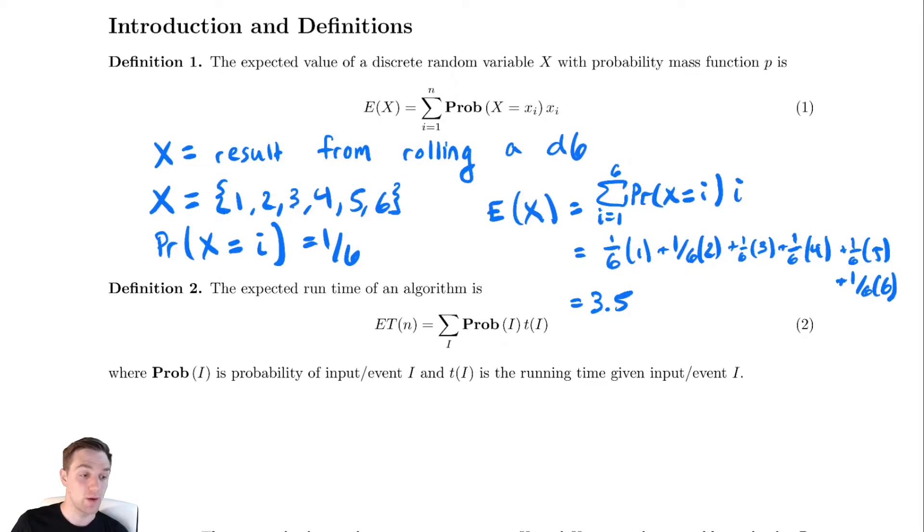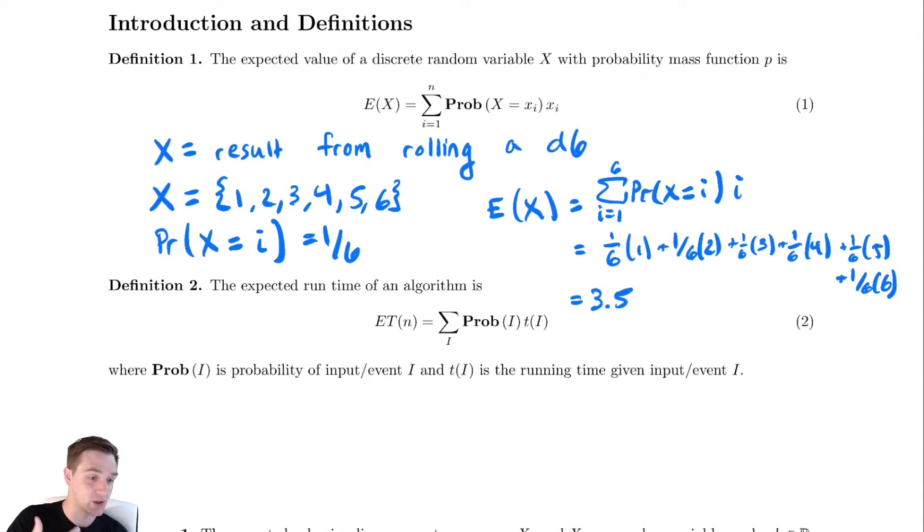We talk about how long does the algorithm take, what is the time for a given input or random event to have occurred, such as a random value being taken, times the probability that that event occurred.